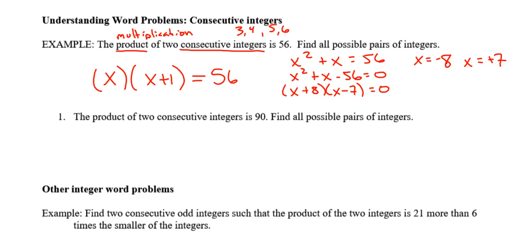My first integer is negative 8. If I add one to that, I get negative 7. My other possibility is to start with 7 and add one to give me 8. So there's all my possible pairs of consecutive integers that give a product of 56. Pause the video and try number 1, then unpause and check your answer.